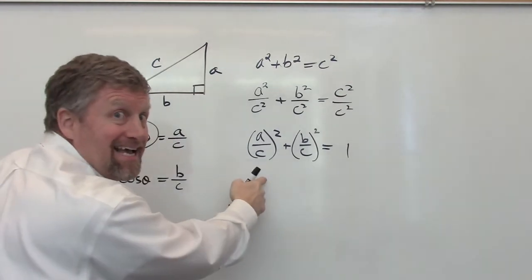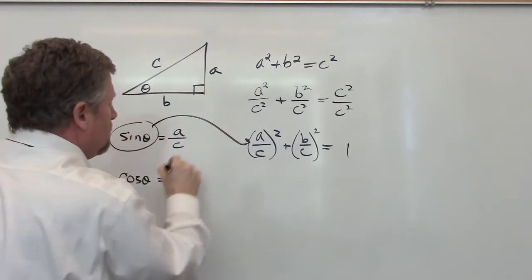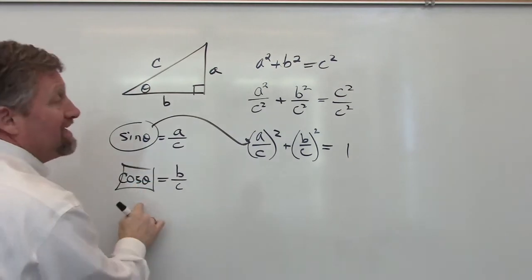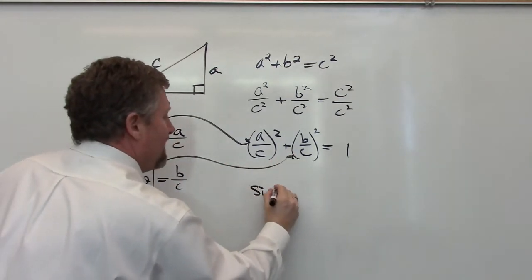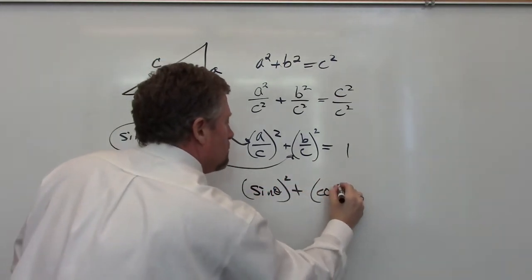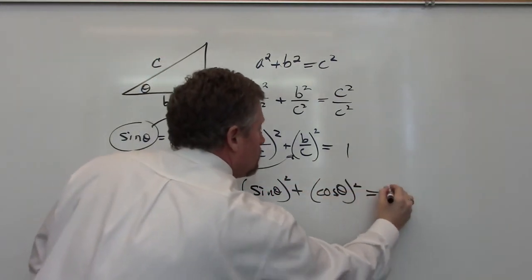A over C is sine theta. B over C is cosine theta. I can rewrite this equation as sine theta squared plus cosine theta squared equals 1.